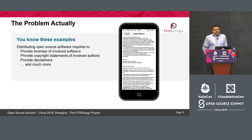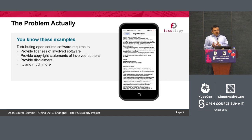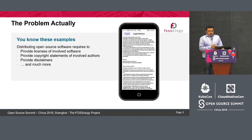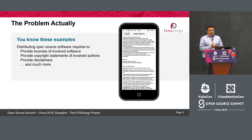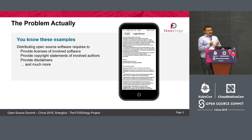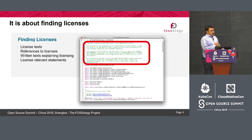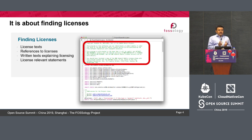I think all of us are familiar with the screen that gives you a legal notice. Before you install software, you need to accept the legal notices. All software that is distributed comes with a certain set of licenses, copyright statements, and disclaimers — all those things are an inherited part of a software in the licensing text. We need to find the license text, references to the licenses, and written text that may not be exact but explains the licensing and the license-relevant text.